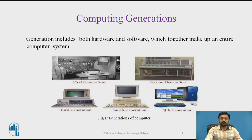Observing through the pictures, in the first generation the space consumed was huge. In the second generation, the computer size was reduced to fit on a large table. In the third generation, the size reduced further to something like a server or mainframe machine. In the fourth generation, ICs were introduced and space was highly reduced. By the fifth generation, the machine is called a personal computer.